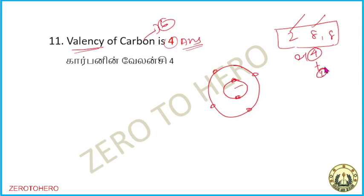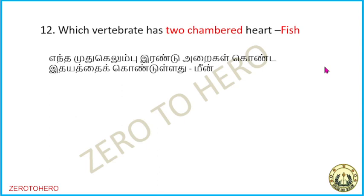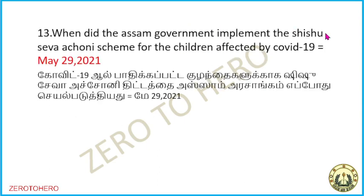The next: which vertebrate has two chambers? That is, two arrays are hot. When did the state government implement the Shishu Seva Angoni scheme for children affected by COVID?